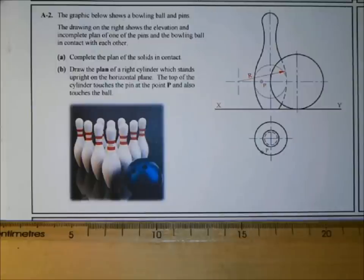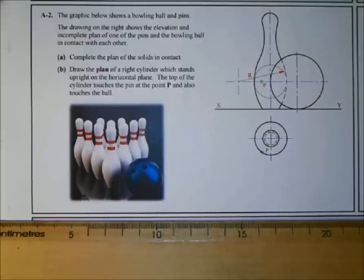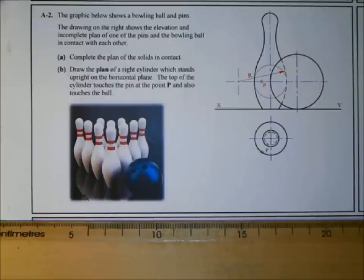Welcome to another DCG tutorial. This question is from the 2013 paper, Section 8 short questions, question A2. The graphic shows a bowling ball and pins. The drawing on the right shows elevation and an incomplete plan of one of the pins and the bowling ball in contact with each other. Part A: complete the plan of the solids in contact. Part B: draw the plan of the right cylinder which stands upright on the horizontal plane — the top of the cylinder touches the pin at point P and also touches the ball.